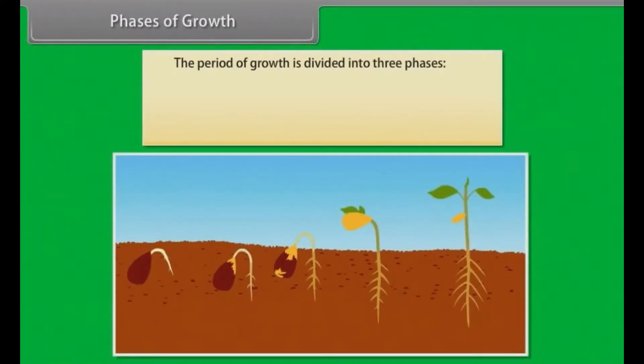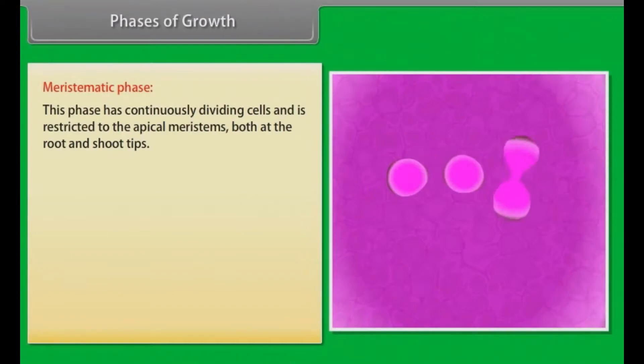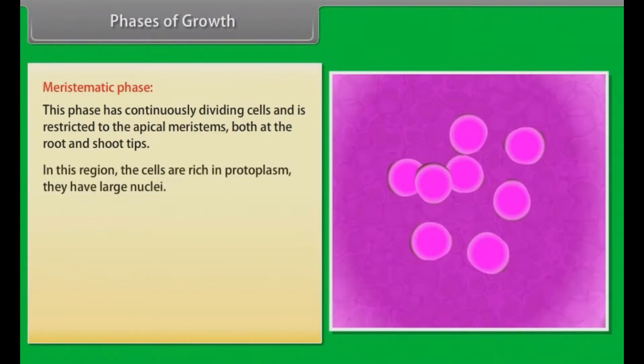Phases of growth. The period of growth is divided into three phases: meristematic, elongation and maturation. Meristematic phase has continuously dividing cells and is restricted to the apical meristems, both at the root and shoot tips. In this region, the cells are rich in protoplasm. They have large nuclei.